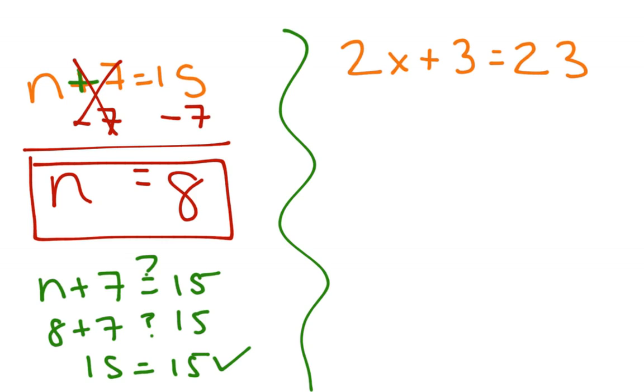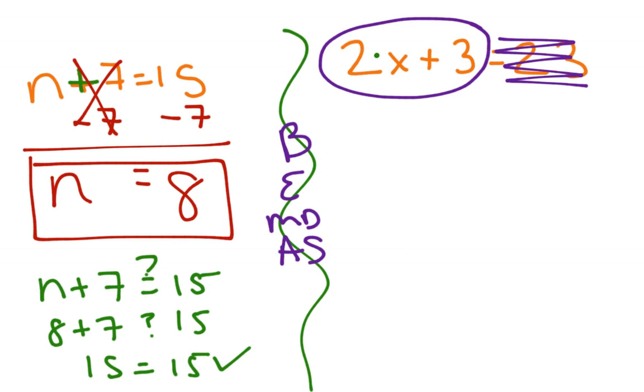The second one is called a two-step equation because you can see that we have multiplication and we have addition in the problem. So we have two things that we have to undo. Think about your order of operations and what we would do if we knew only this side of the information. If we knew the value of x, we would multiply 2 times that number and then we would add 3 because that's our order of operations.